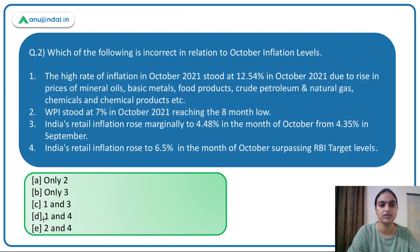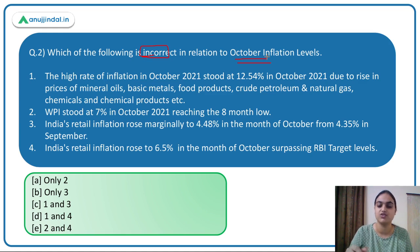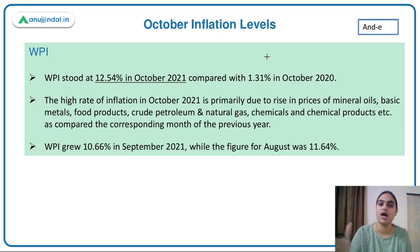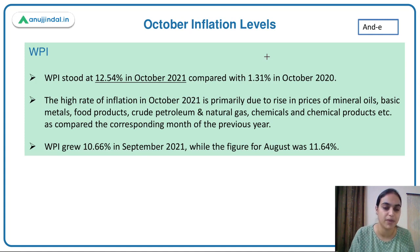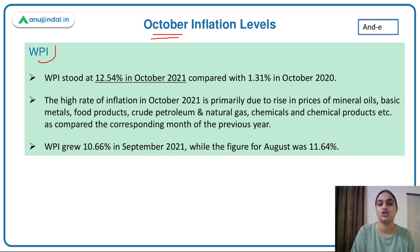Moving to the next question: which of the following is incorrect in relation to October inflation levels? Every month, inflation data for the previous month is released. The data for October is now out. Inflation is basically a sustained rise in prices over a period of time. Let's discuss the inflation levels for the month of October.